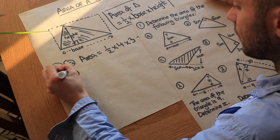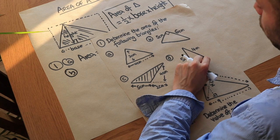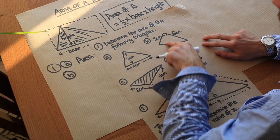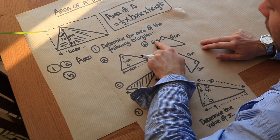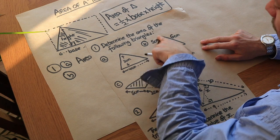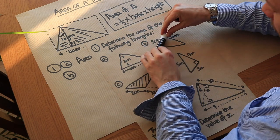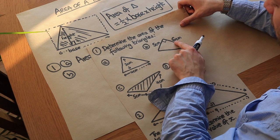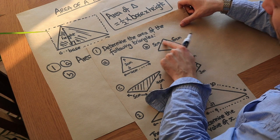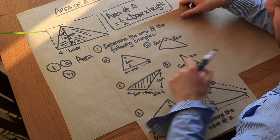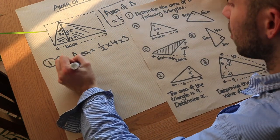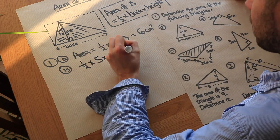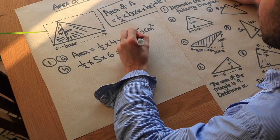What about the second one? We don't want to use the unlabelled side as the base because we wouldn't know the perpendicular height. If we make the 5 the base, then the perpendicular height at right angles to it is 6. Or we could make the 6 the base and the 5 the height. Either way, we do half times 5 times 6, which gives 15 centimetres squared.